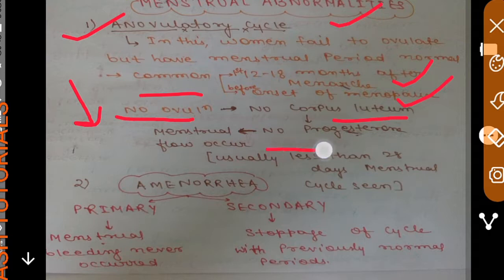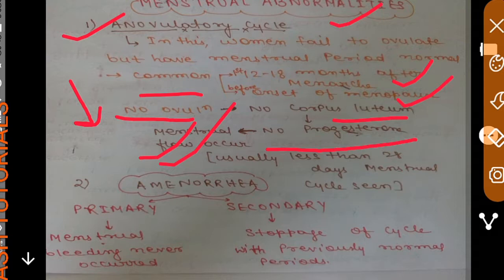If there is no corpus luteum, it means there will be no progesterone. Progesterone, as we know, is a pregnancy hormone. If there is no progesterone, the endometrium will not be maintained and it will start to degenerate, causing menstrual flow. Due to the absence of progesterone, the menstrual cycle is usually less than 28 days in an anovulatory cycle.